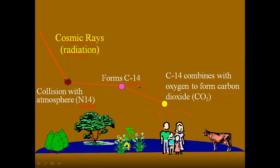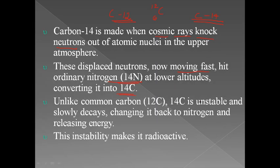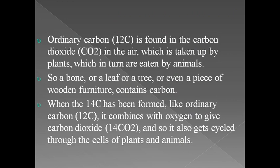Carbon-14 is present in the atmosphere and it can combine with oxygen to form carbon dioxide. This is just like normal carbon dioxide — the only difference is that the carbon in this CO2 molecule is radioactive; it is C-14, not C-12. Unlike carbon-12, carbon-14 is unstable and radioactive, and it will slowly decay, changing back to nitrogen and releasing energy. This ordinary carbon is found in the CO2 in the air, which is taken up by plants.